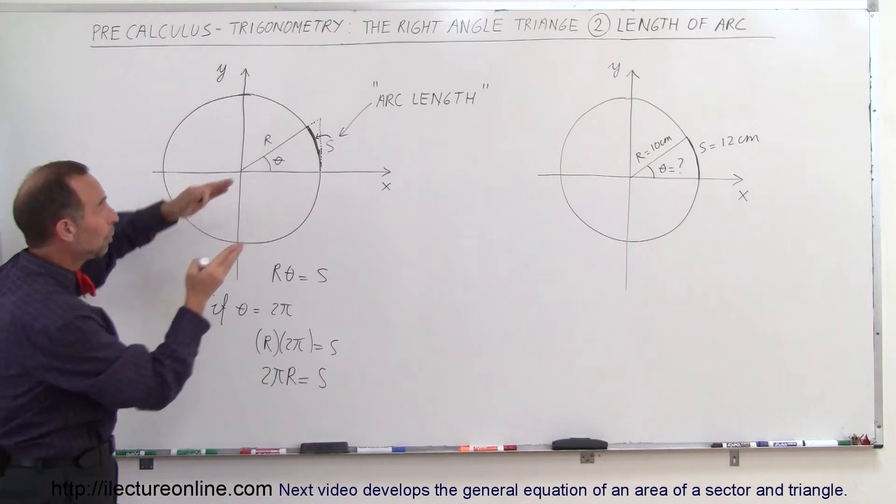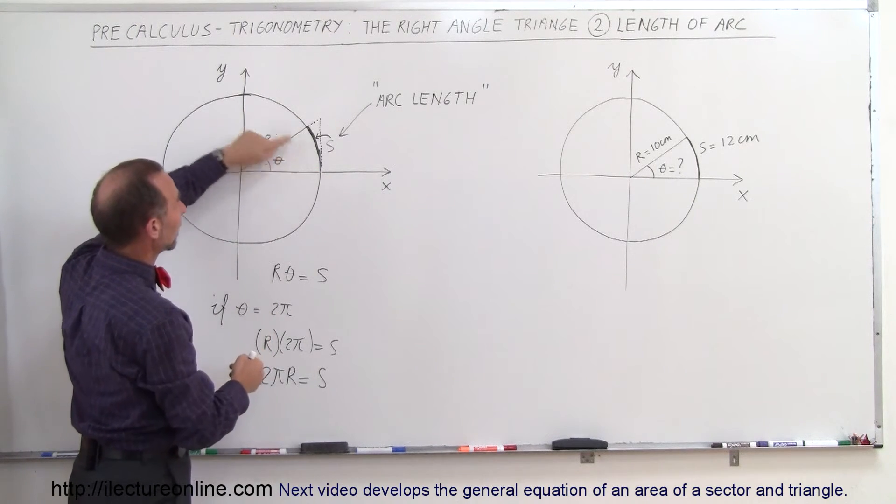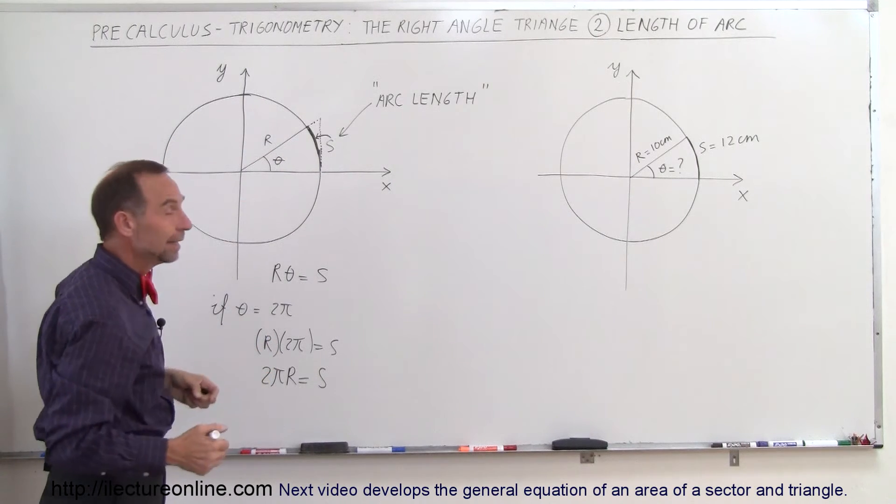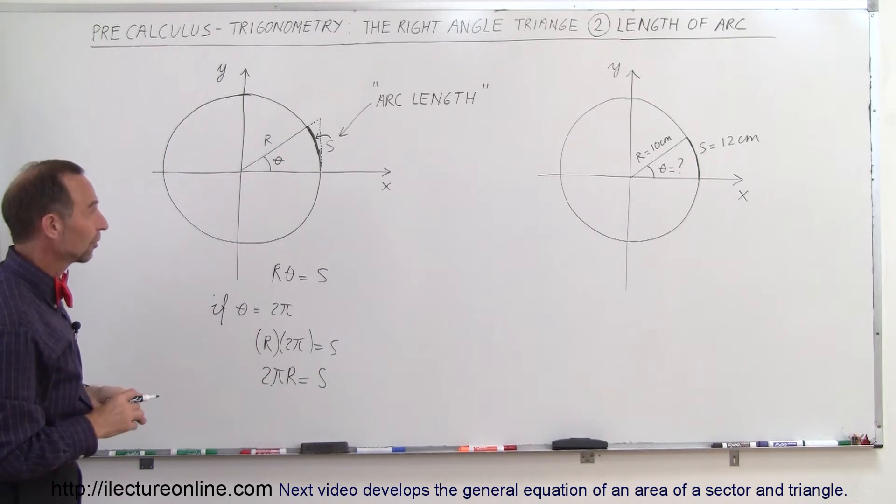It tells you how long that portion along the circle is, and of course if the angle is 360 degrees or 2π radians, then S indeed is the full circumference of the circle.